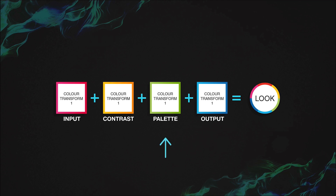Then we apply a color transformation or a color palette. This palette is usually how we add character to the look and bring emotion. The last transformation in the row has to always be the output transformation. This guarantees that no matter in what post-production studio, visual effects studio, or on a camera on set this show LUT is used, we will know that the output is the exact color space we need to work in to be able to calibrate and understand exactly what we are doing.